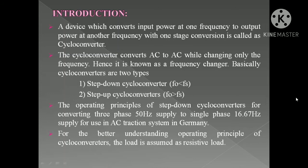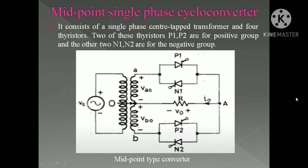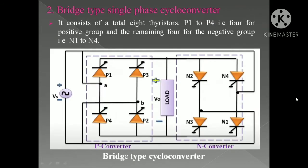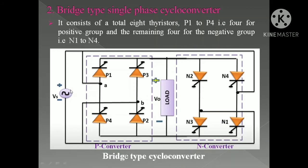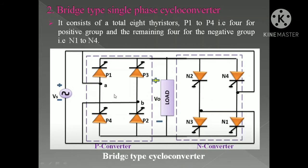I have already discussed these points in the previous midpoint cycloconverter video. Now moving quickly to the bridge type single-phase cycloconverter — here we have an eight thyristor configuration connected between the supply and the load. There is an AC supply, then a four-thyristor bridge connected in one fashion, and again a reversely connected bridge type thyristor configuration, making eight thyristors in total.